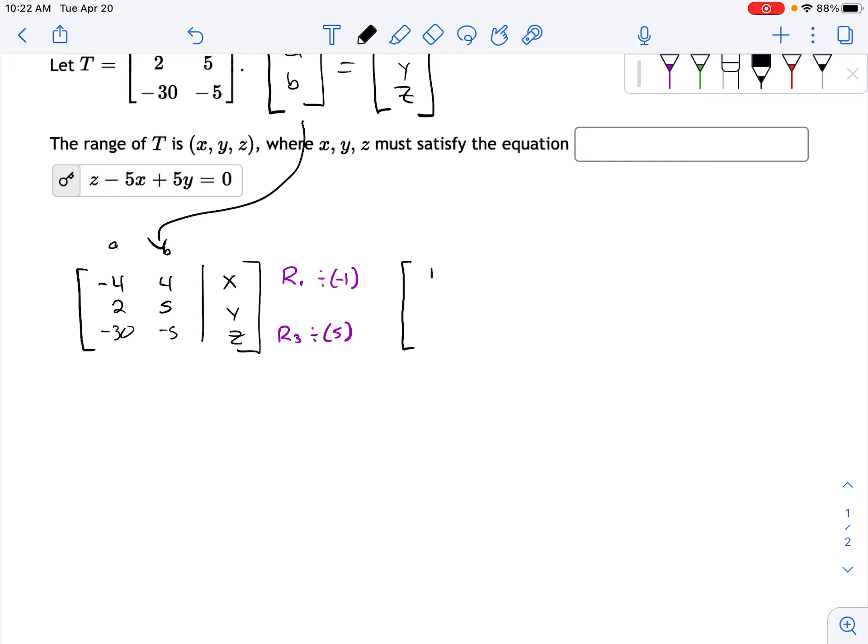So that's going to give me one, negative one, I'm sorry, not negative one, divided by negative four, negative one-fourth x. And then the next row I'm not going to change, two, five, y. Then this one's going to become negative six, negative one, or one-fifth z.